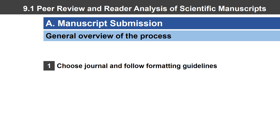It turns out that every journal has slightly different rules and slightly different guidelines. Each journal has a particular set of rubrics they follow for whether or not they want to consider publishing a particular paper. Not all journals are the same, and therefore not all articles from journal to journal are the same in their scope and findings. Impact factor is a number assigned to each journal — various scales exist, and the higher the number, the higher the impact factor.